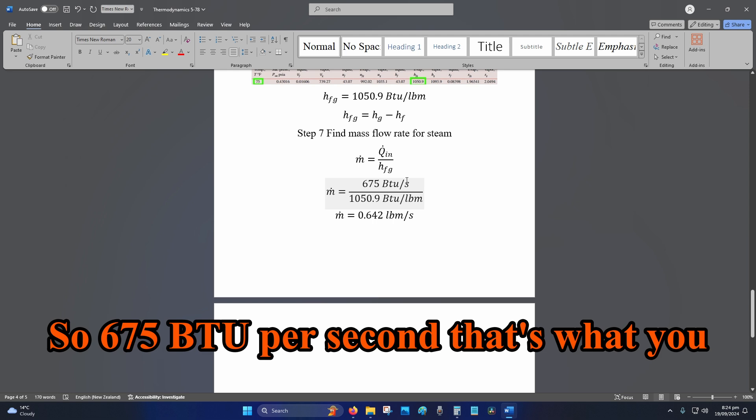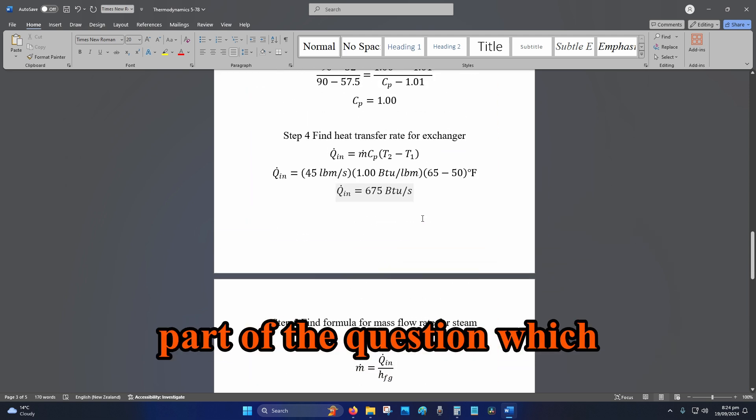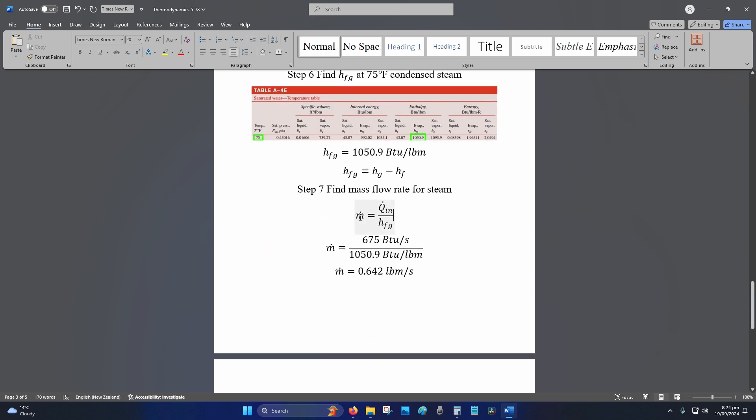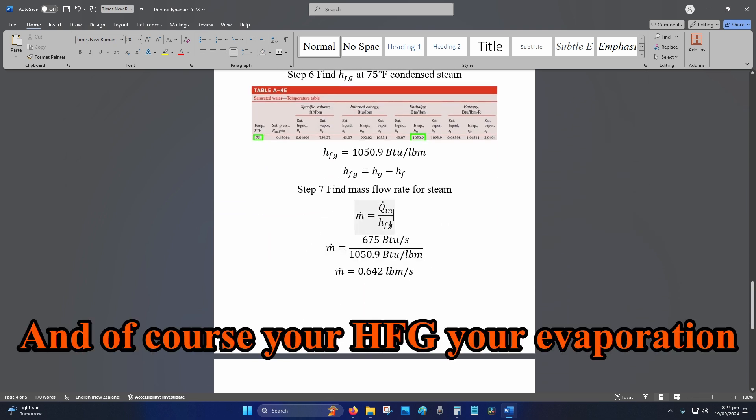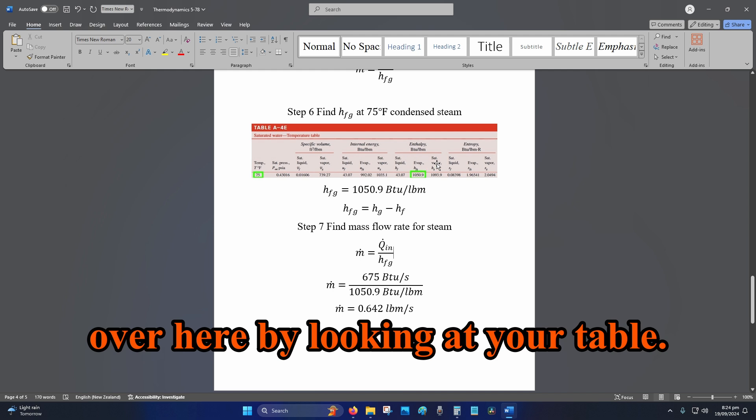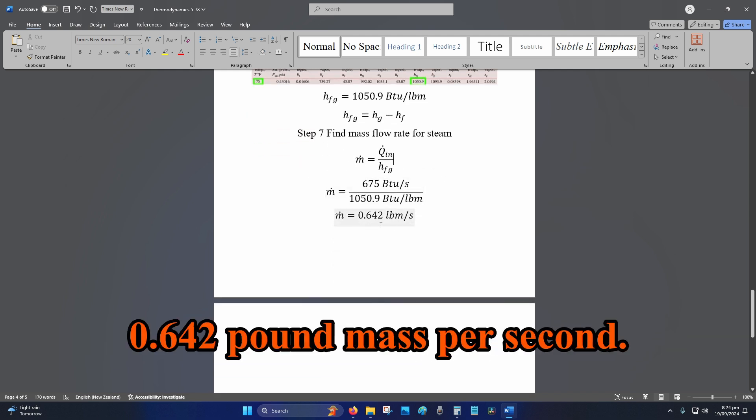So 675 BTU per second, that's what you figured out for the first part of the question, which is step four. And of course, your HFG, your evaporation enthalpy, is what you just worked out at step six, right over here, by looking at your table. So that will give you 0.642 pound mass per second.